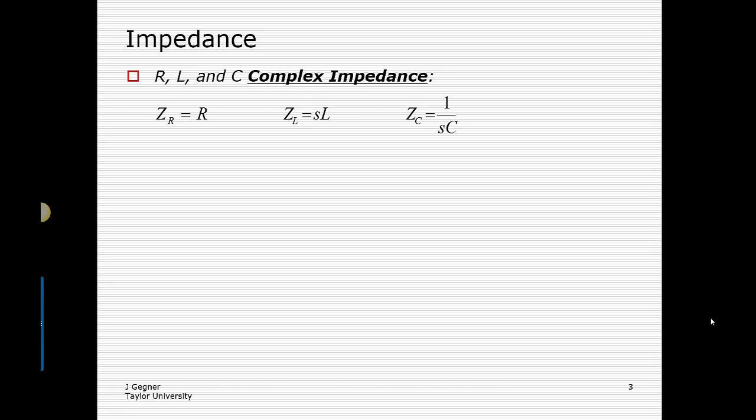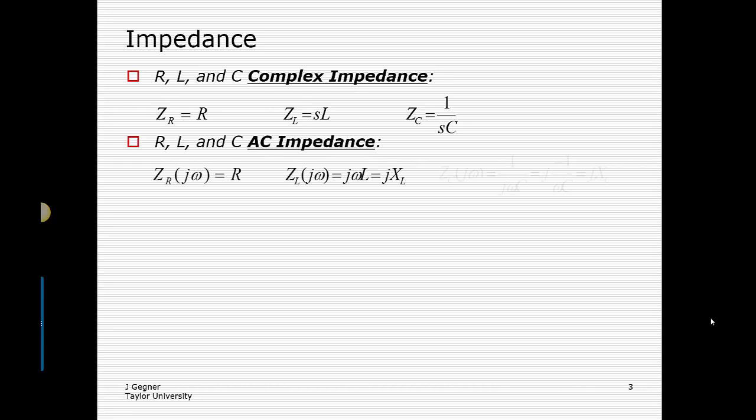There is a distinction, and one reason for the complex impedance label is because we often want to consider the special case where the excitation — the e to the st signal — is that of a sinusoid. Using Euler's formula, you can show that a sinusoid like sine omega t or cosine omega t is made up of two complex exponentials: e to the j omega t and e to the minus j omega t. Those still fit the e to the st form, but here s equals j omega or minus j omega. In such a case, we refer to this as the AC impedance.